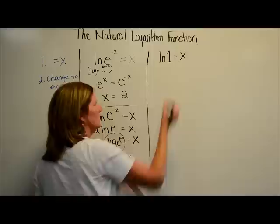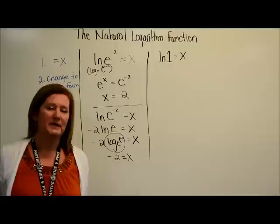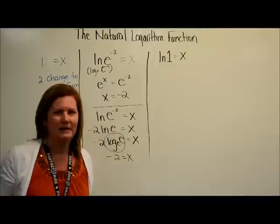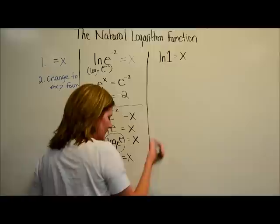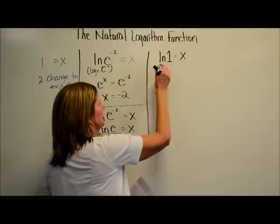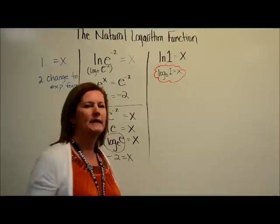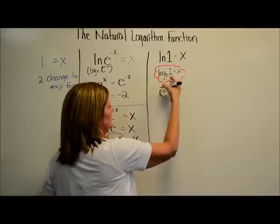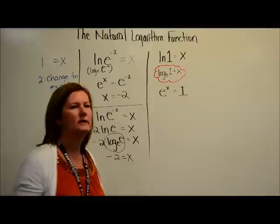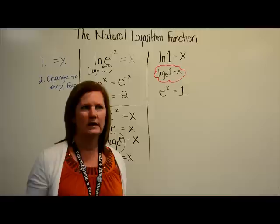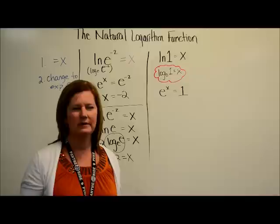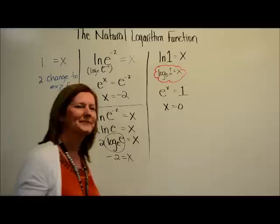Here's another one: natural log of 1 equals x. I'm going to change to exponential form. Log base E of 1 equals x — when I put it in exponential form, my base is E, and E to the x equals 1. Think about it: what is the only exponent that gets you 1 every single time? Whether you have 2 to the x equals 1 or 3 to the x equals 1, the answer is zero. So x equals zero.